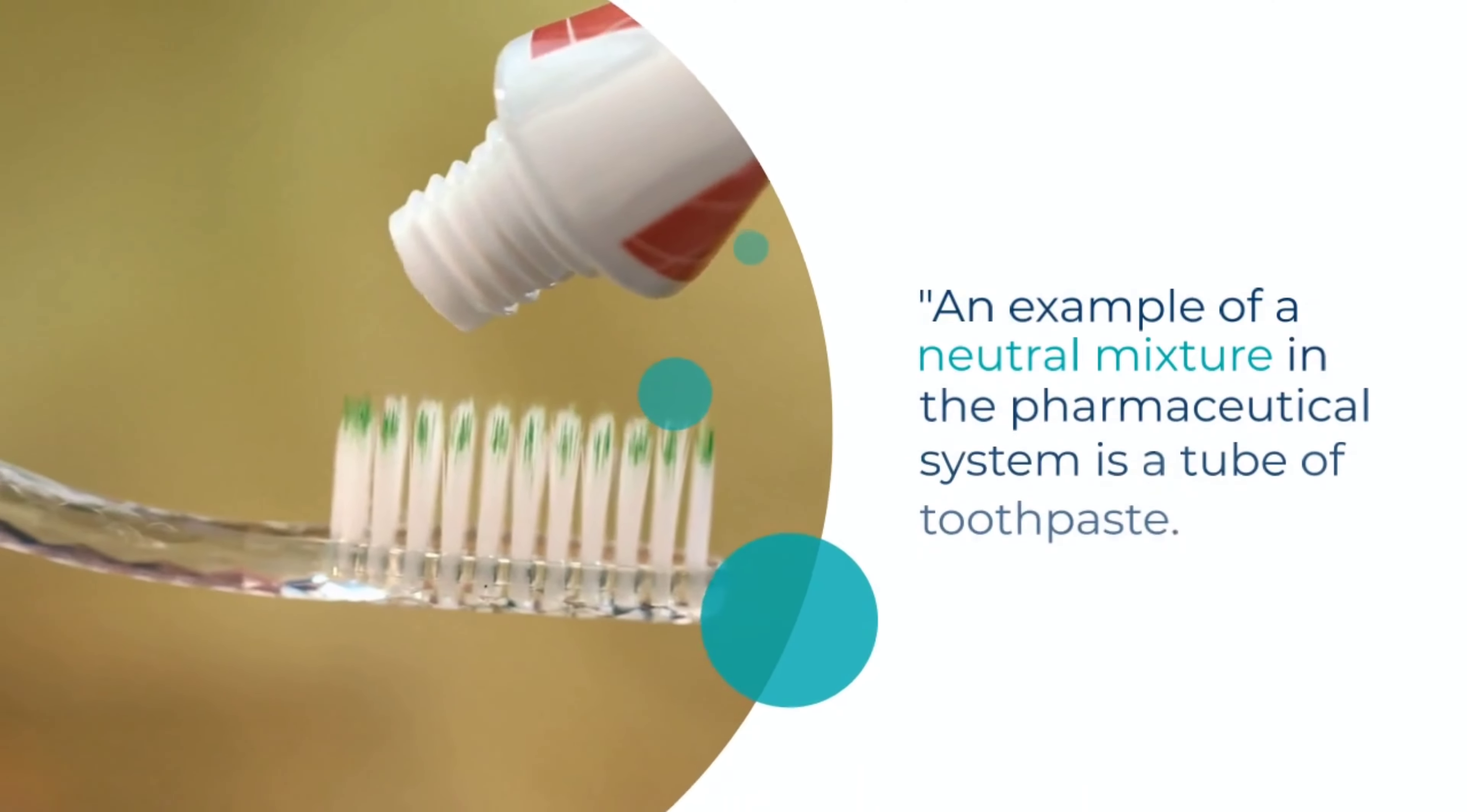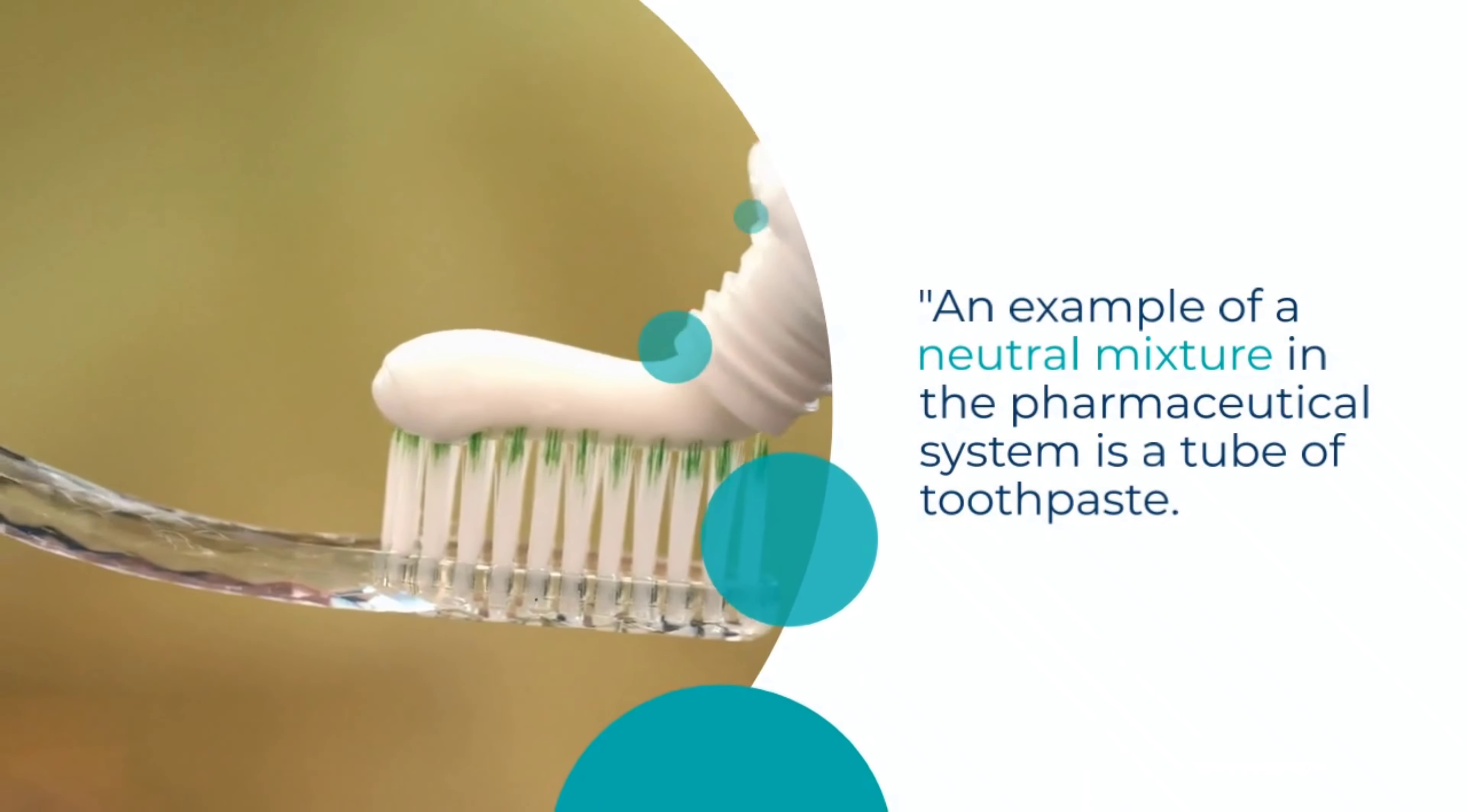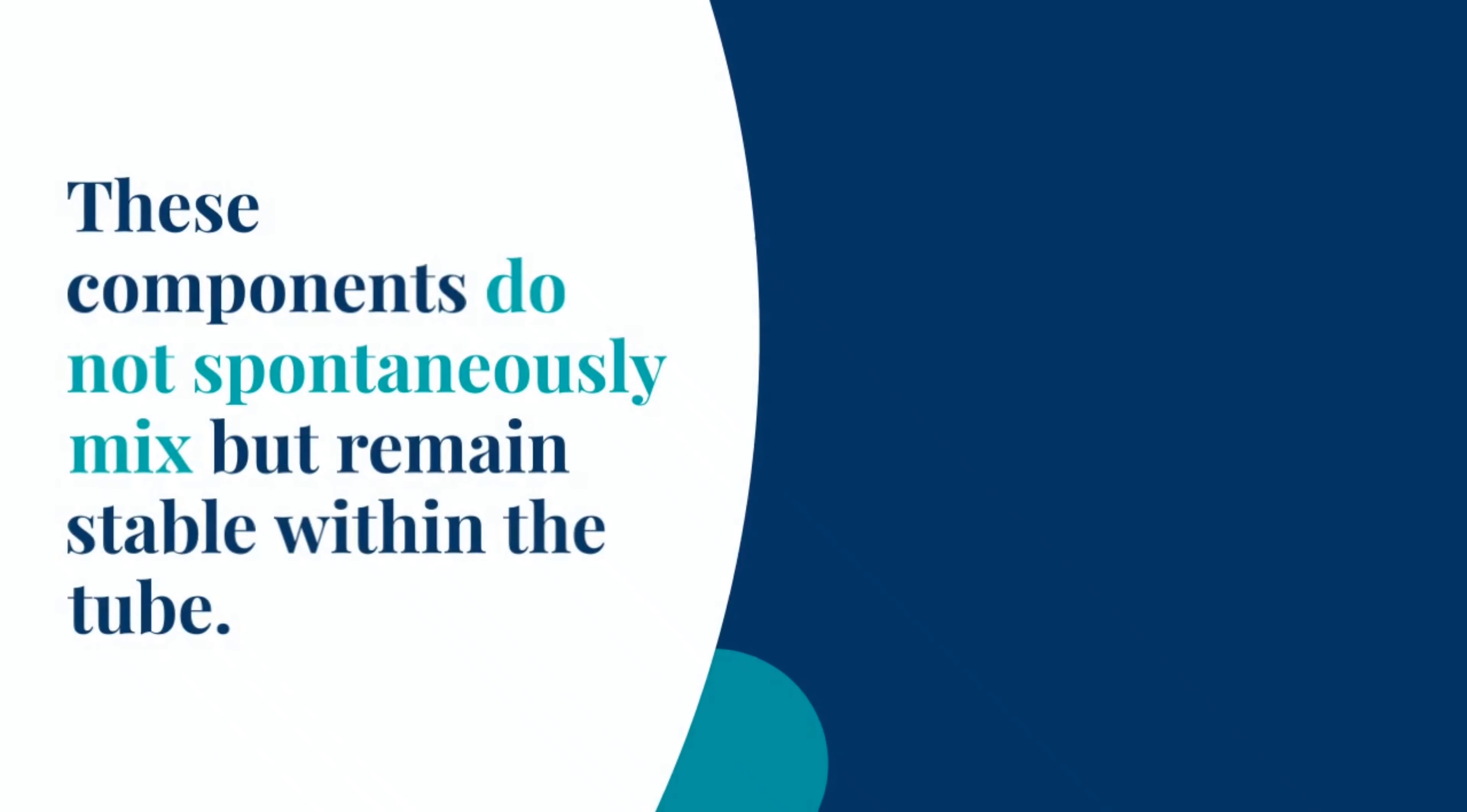An example of a neutral mixture in the pharmaceutical system is a tube of toothpaste. Toothpaste contains a combination of water, abrasives, and binders. These components do not spontaneously mix but remain stable within the tube.